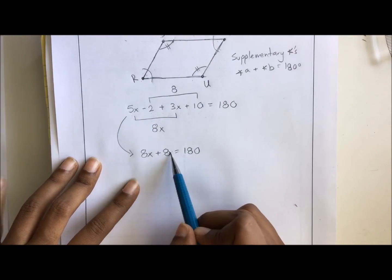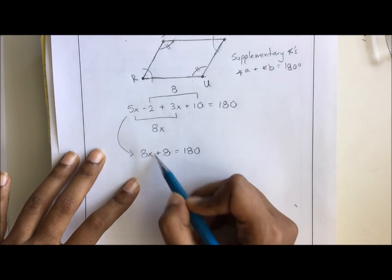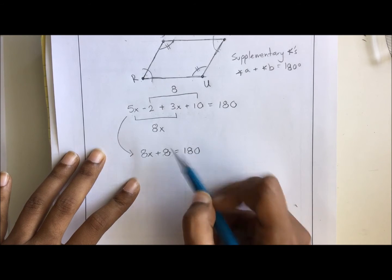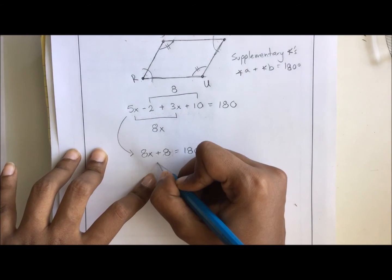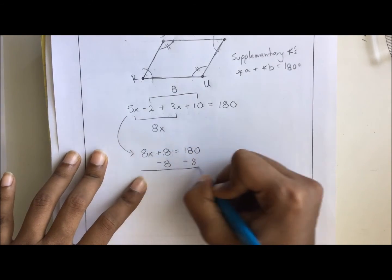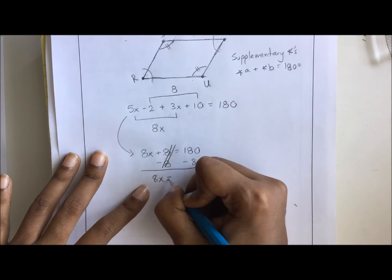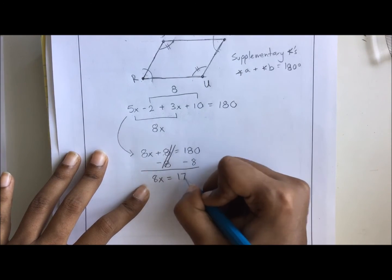Clearly, these two are not like terms. They don't share a variable, so we're going to have to combine 180 and 8. However, this is on the opposite side of the equal sign. So we're going to do inverse operations. Minus 8 on both sides. That will give us 0. But then left with 8x equals 180 minus 8 is 172.